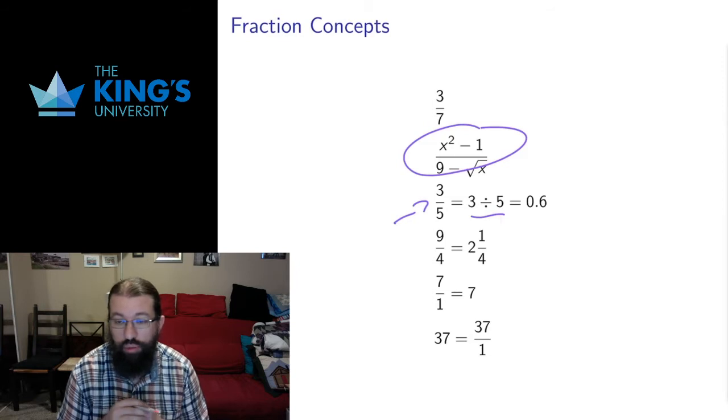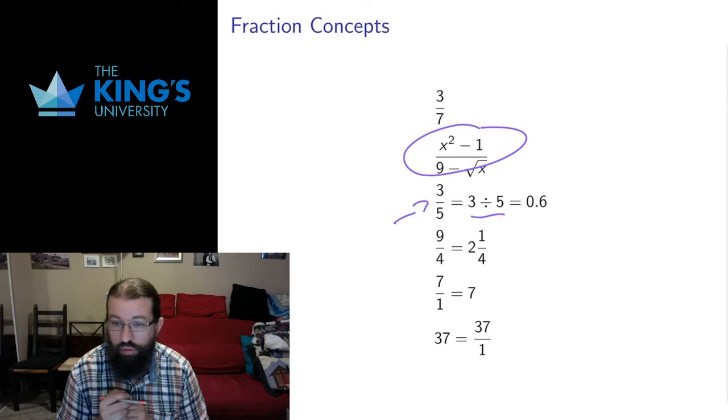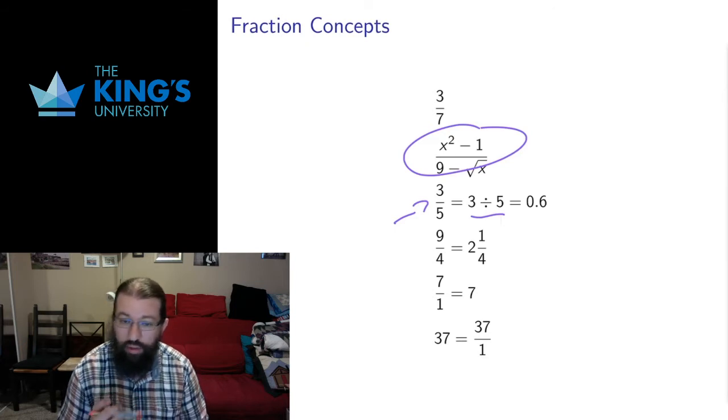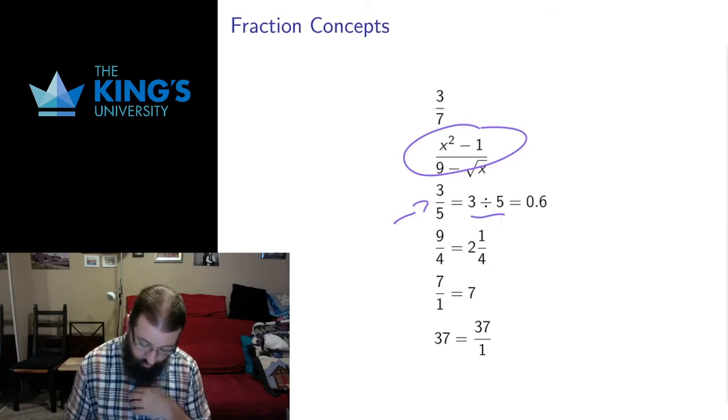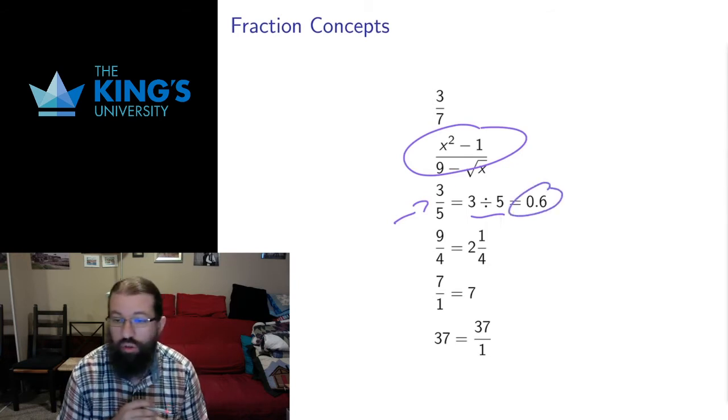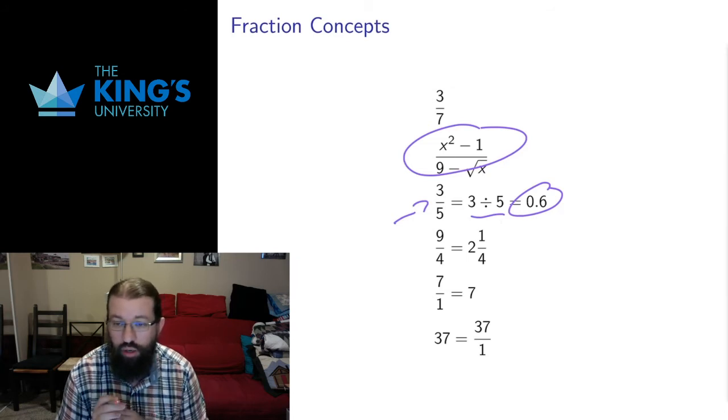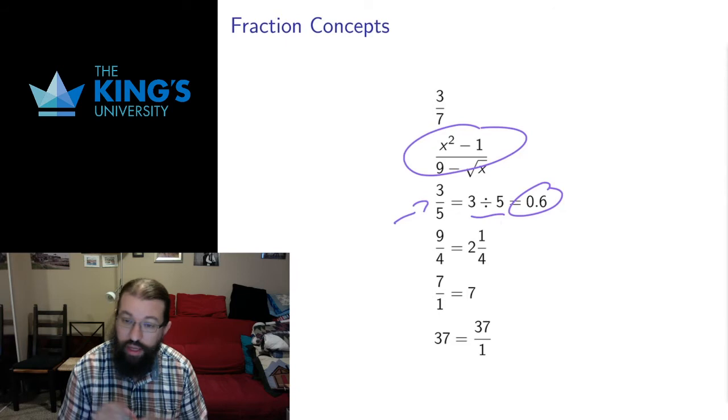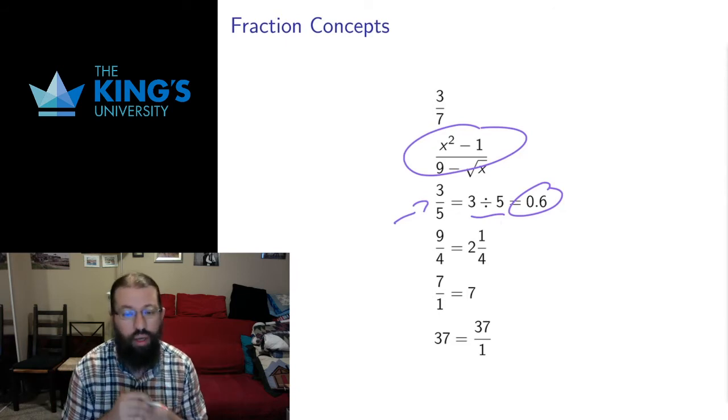So when I have three fifths, I think of dividing a whole into five parts and collecting three of those parts. I also think of dividing three into five pieces. If I take three things divided into five pieces, each piece is 0.6 of a solid piece, or three fifths of a solid whole. So I think of fractions as division—three divided by five as well as the fraction three fifths. That always plays around in my mind when I'm doing mathematics.